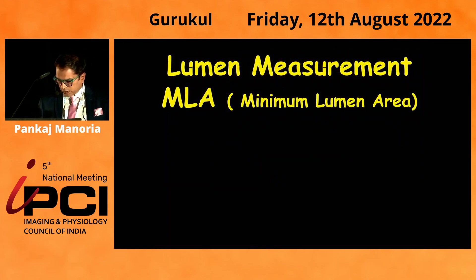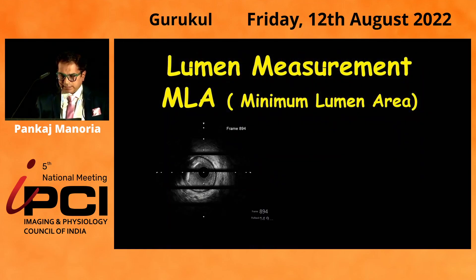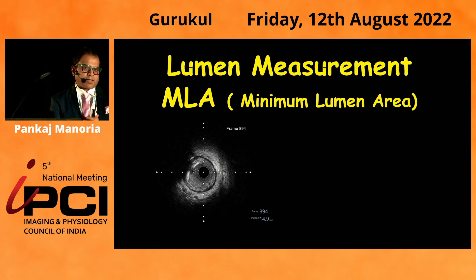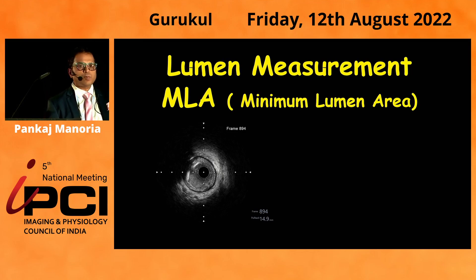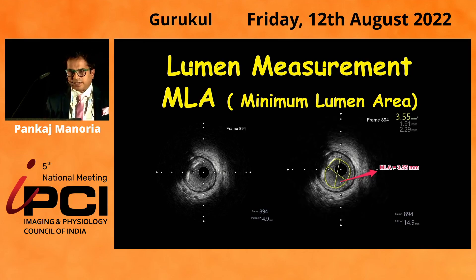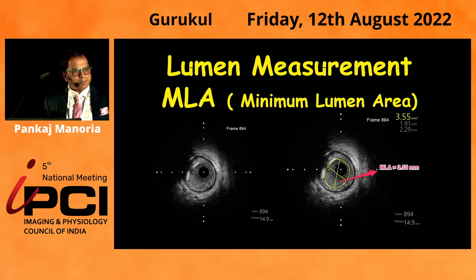The first and foremost important point is: what is an MLA? Before identifying what is an MLA, we need to identify where is the intima-lumen interface, then only we will be able to identify the MLA. Once you circle that interface, the area inside is the MLA.